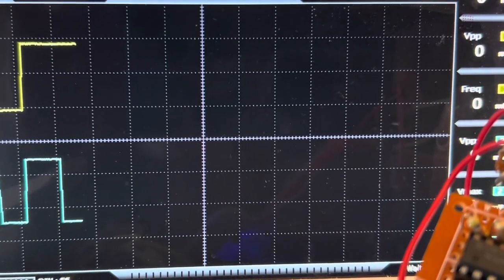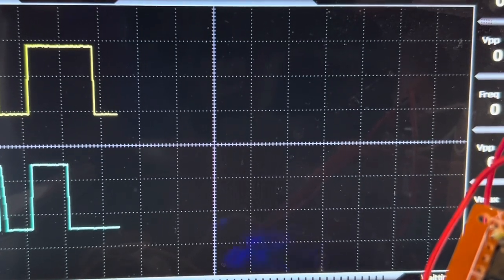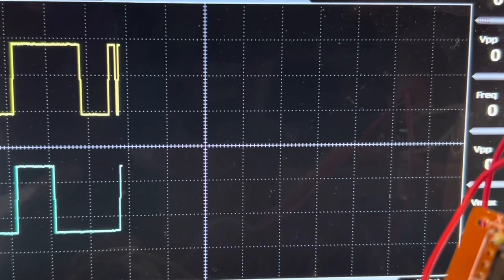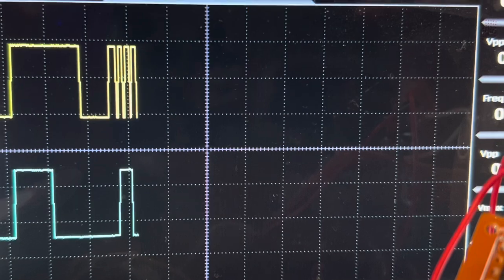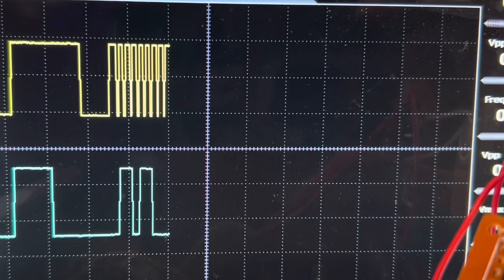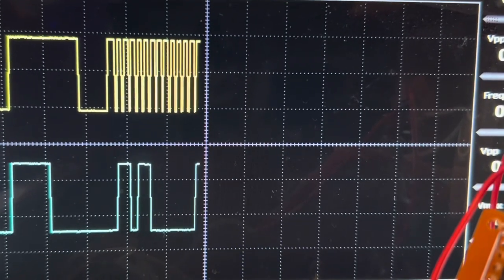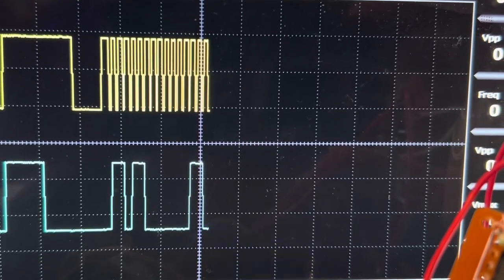There's the start condition. I'm just collecting the data now. 2, 3, 4, 5, 6, 7, 8. Acknowledge. 1, 2, 3, 4, 5, 6, 7, 8.